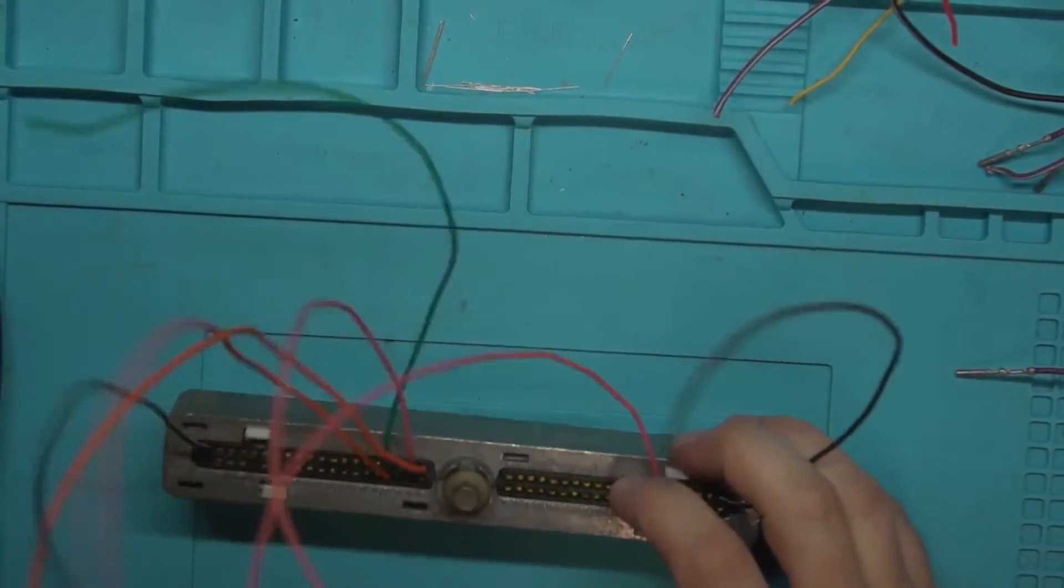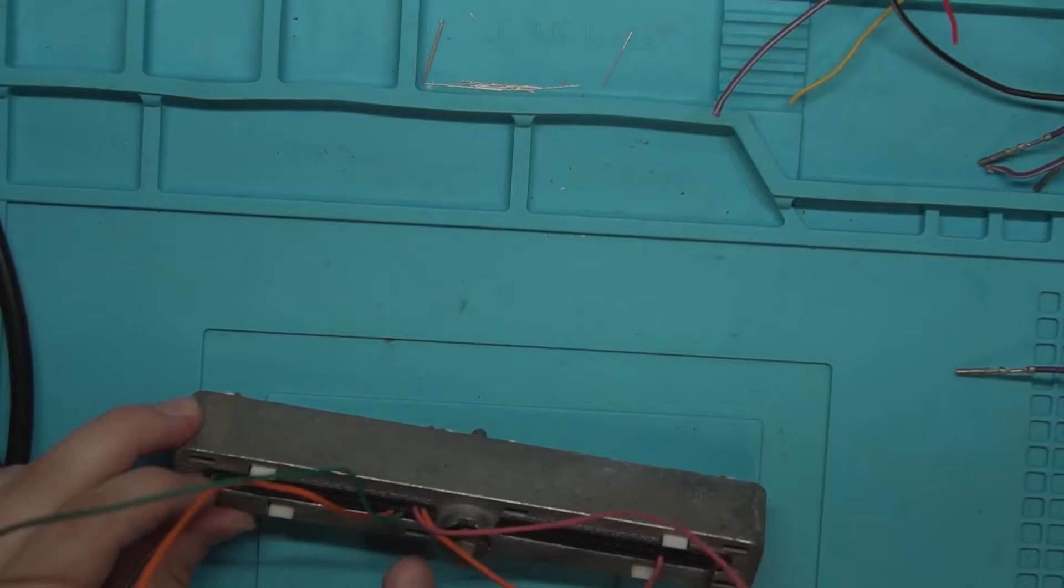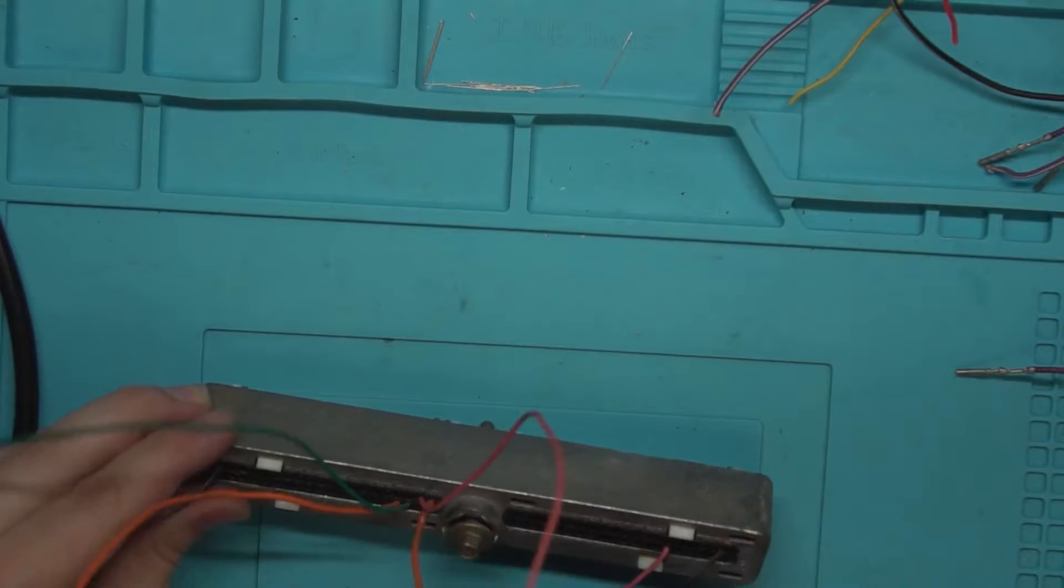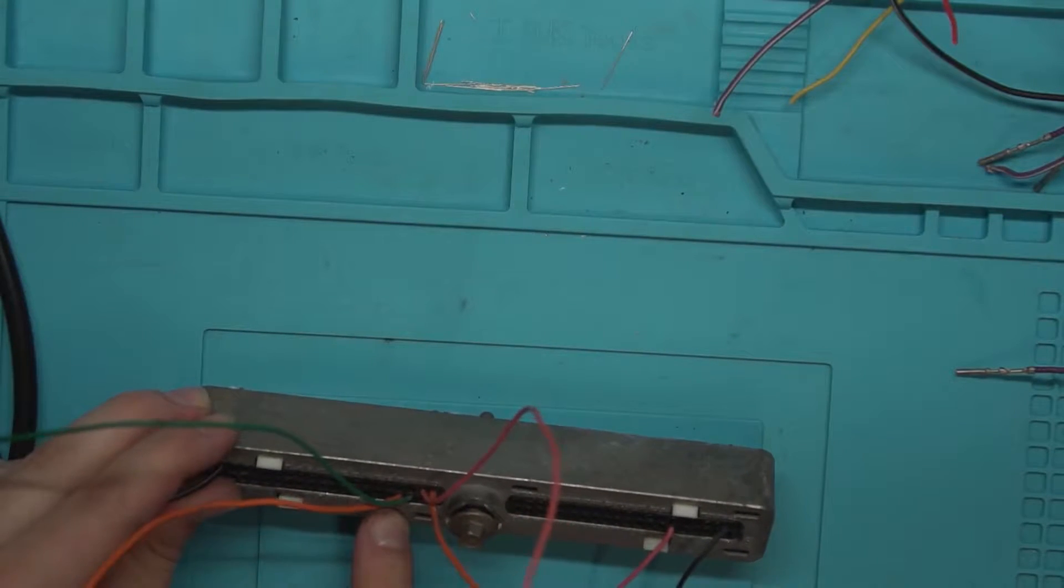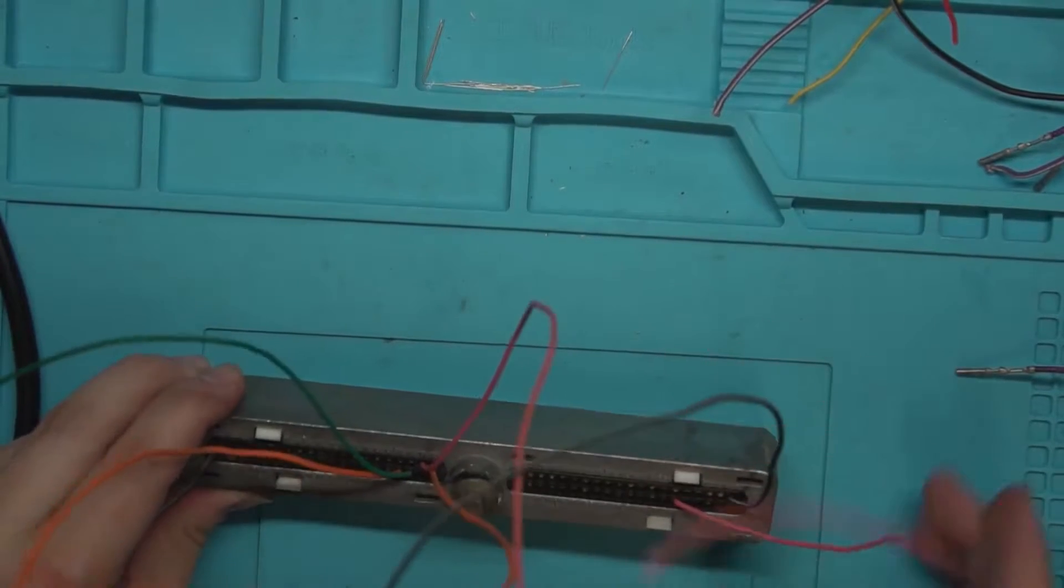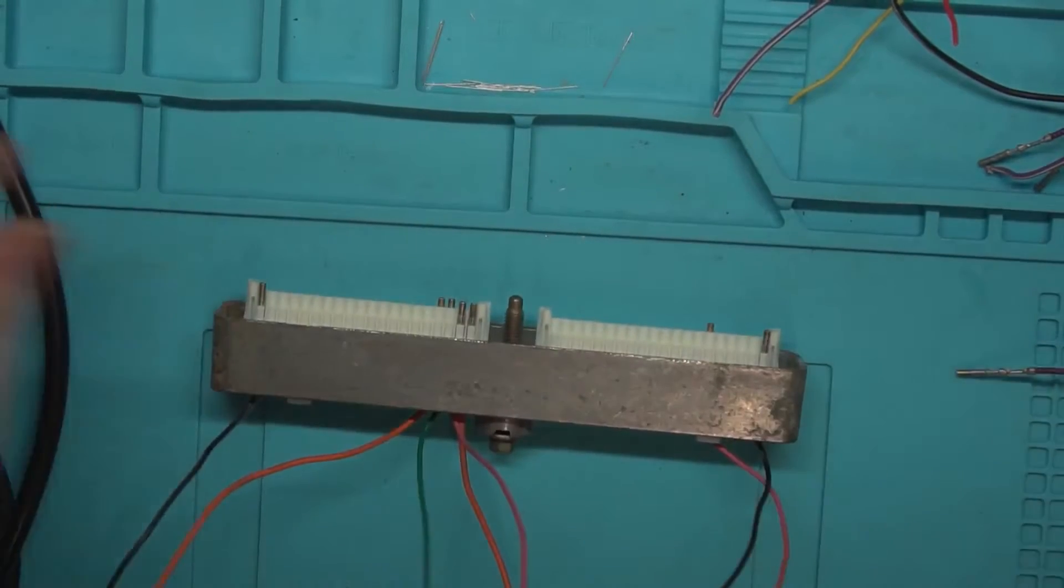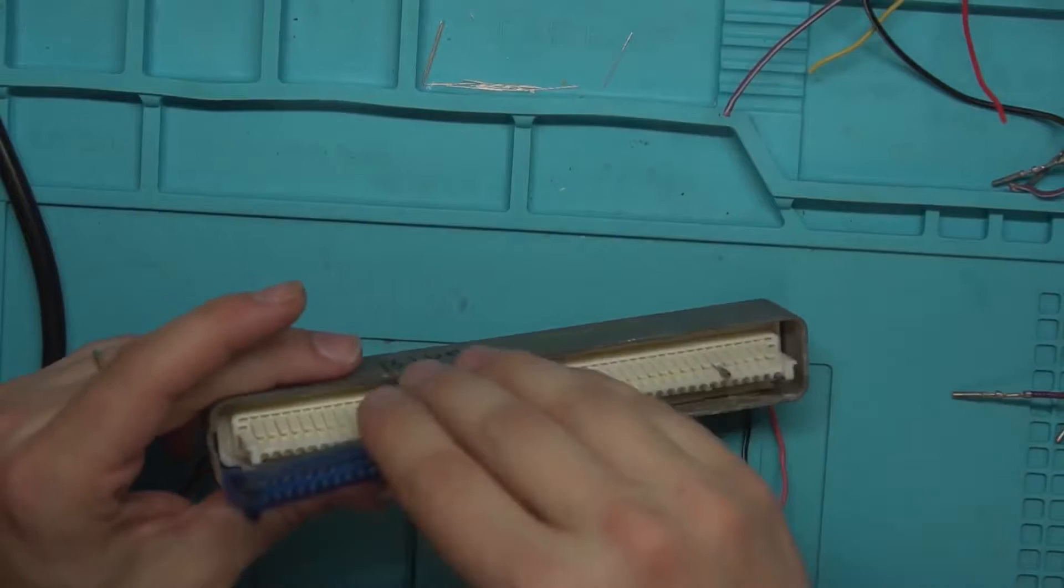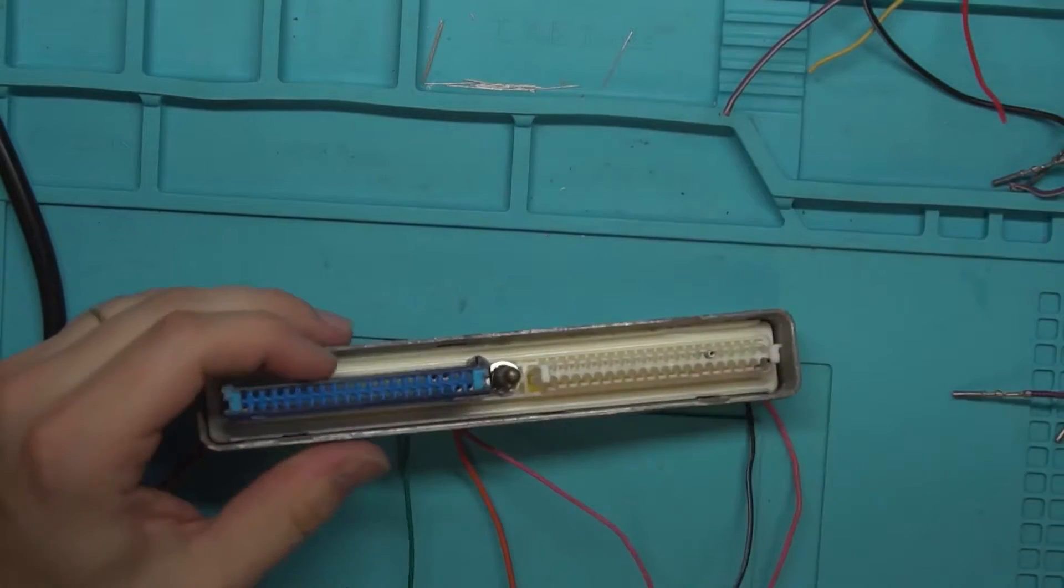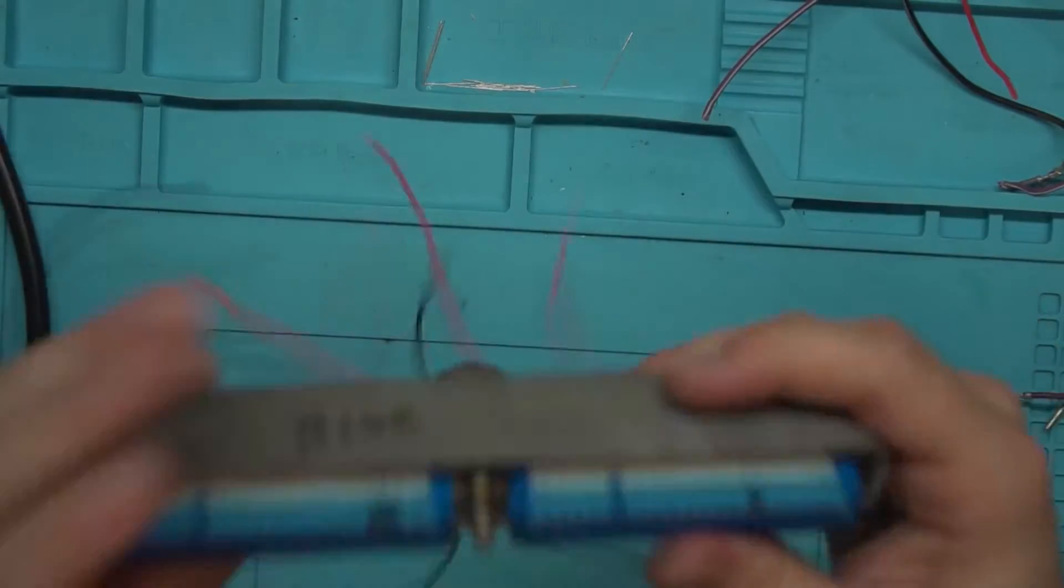So the blue connector, what we end up having left after pulling out all the pins we don't need, is we have pin one, pin 19, pin 20, and then pin 40. And we're going to come down to the bottom. We have 57, 58, and that would be 75. So that's all what we need off of the blue connector. So we can go ahead and put the caps back in there.